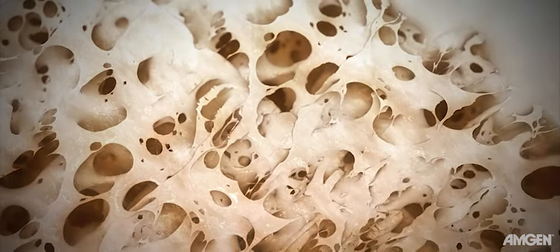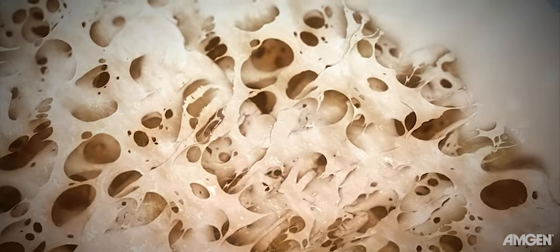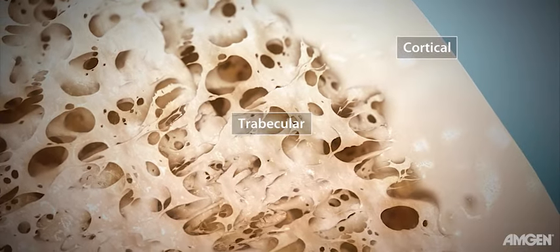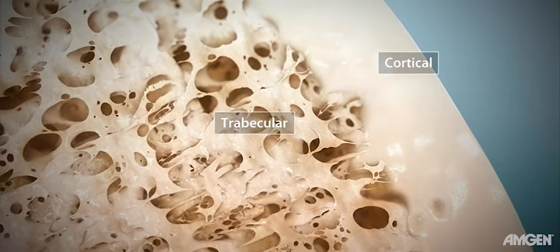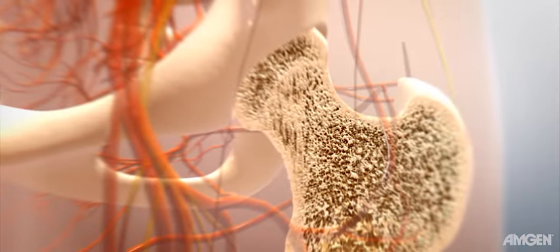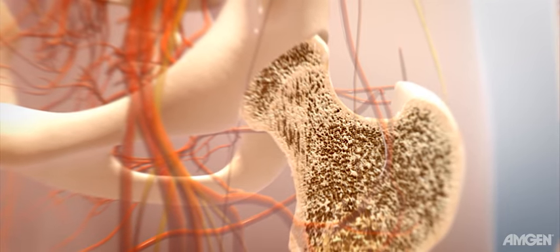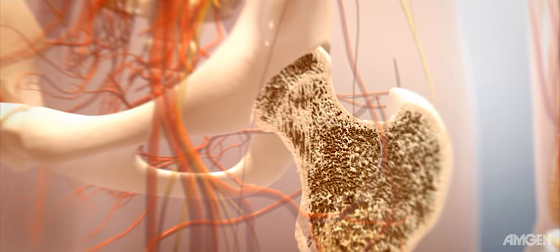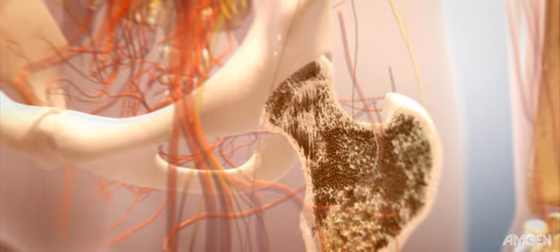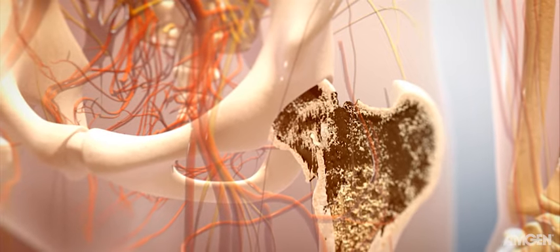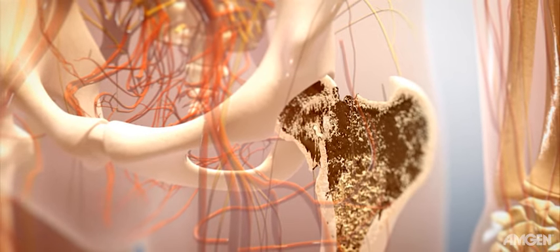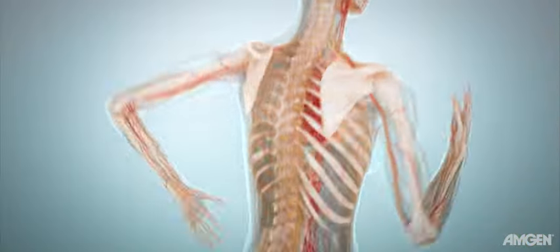Another common fracture site is the hip, which is comprised of both cortical and trabecular bone. It is thought that cortical bone may play a greater role than trabecular bone in maintaining bone strength at the hip. Fractures of the hip have been associated with substantial morbidity, mortality, and health care costs.